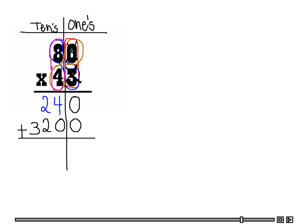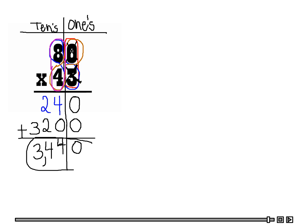All we have to do now is simply add. 0 plus 0 is 0, 4 plus 0 is 4, 2 plus 2 is 4, and we just bring down the 3 — there is nothing to add that with. So our answer is 3,440.